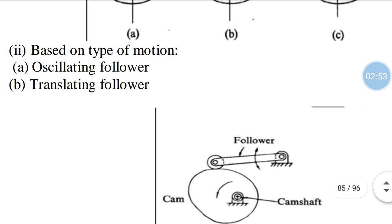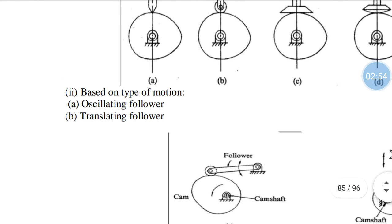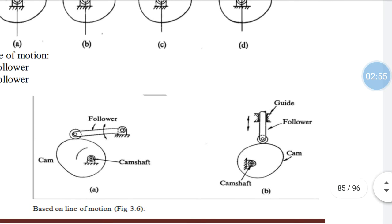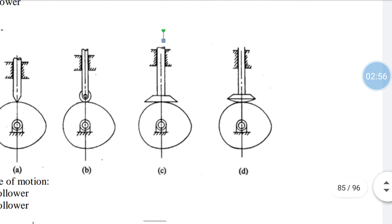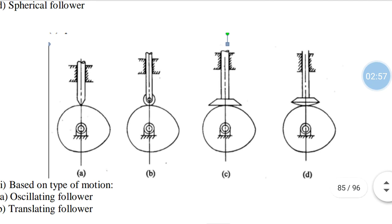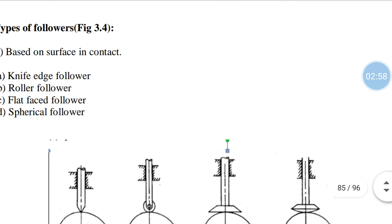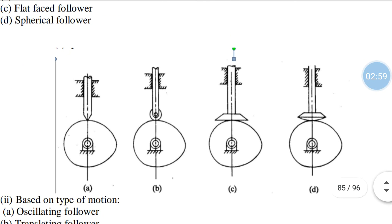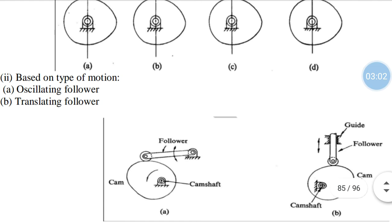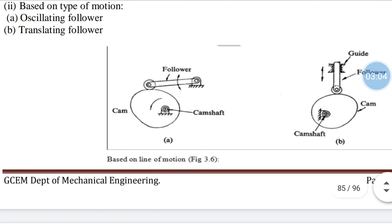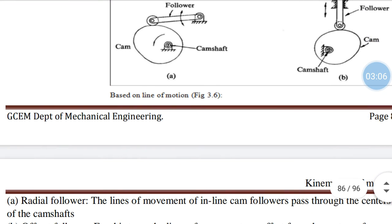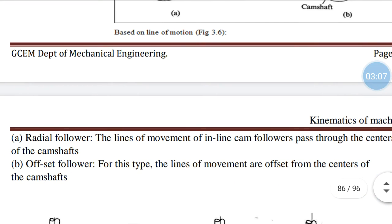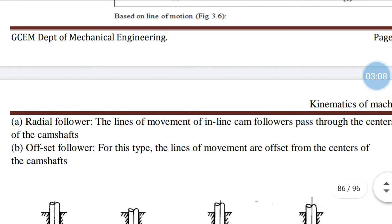Another one is the translating or reciprocating follower. All the types explained at the top are reciprocating followers, while the oscillating follower oscillates. These are the classifications of the follower based on type of motion.